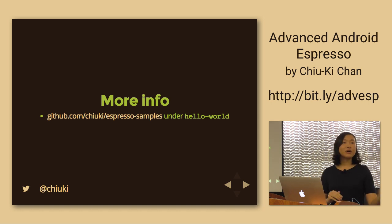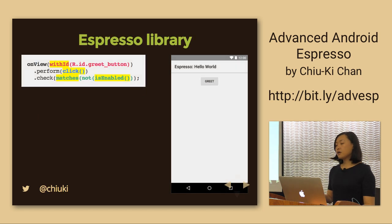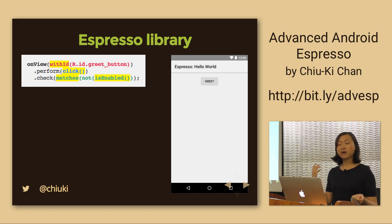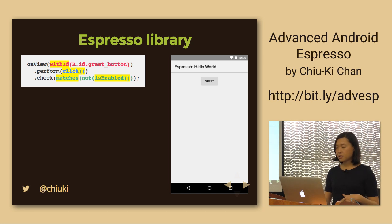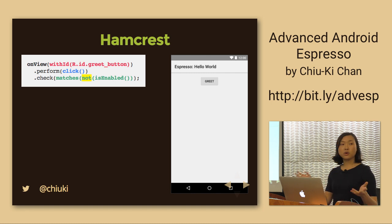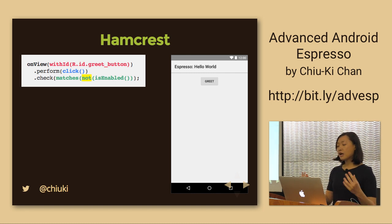Before we do something more complicated, I want to show you the two different things I'm using. The highlighted parts come from the Espresso library — they're Android-specific, like looking for an ID or checking enabled state. But the 'not' function comes from Hamcrest, a Java library that allows matching. Espresso's matchers are actually built on top of Hamcrest, and you can mix and match either.